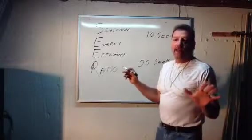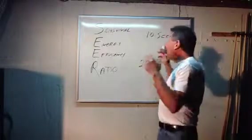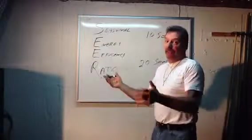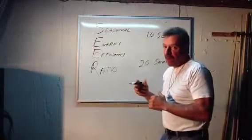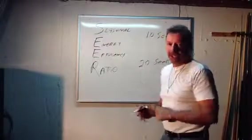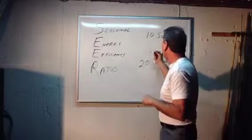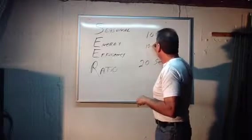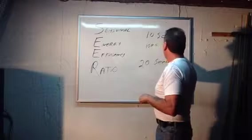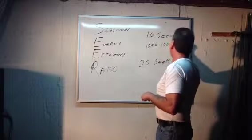So for every watt of power I use, I get 10 BTUs. For every 10 watts of power, I get 100 BTUs toward cooling my room. 10 watts equals 100 BTUs.